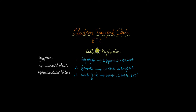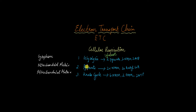So far in our journey to learn about cellular respiration, we have talked about three processes: glycolysis, pyruvate oxidation, and the Krebs cycle. Glycolysis, which takes place in the cytoplasm, involves the oxidation of one glucose molecule to yield two pyruvates, two NADH, and two ATPs. The two pyruvates then undergo pyruvate oxidation in the mitochondrial matrix, where for each pyruvate you get one NADH and one acetyl-CoA. So for the two pyruvate molecules, we have two NADH and two acetyl-CoAs.